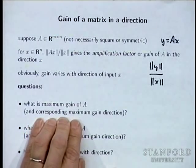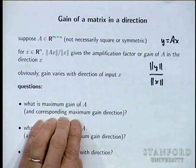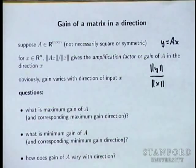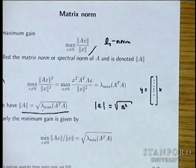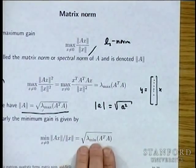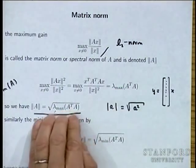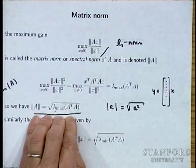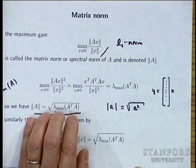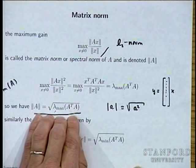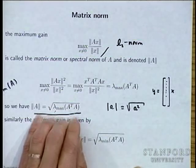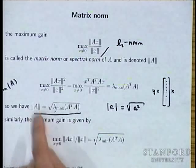Last time we asked: what is the maximum gain of a matrix? The answer is called the norm of a matrix, and it is given by the square root of the largest eigenvalue of A transpose A. You have to be careful because A is not necessarily symmetric or even square. A transpose A, however, is always square and positive semidefinite.